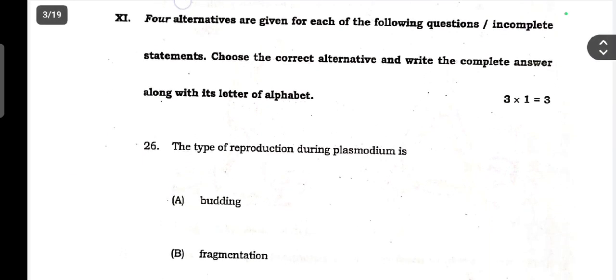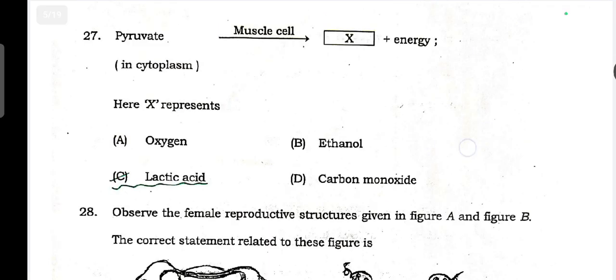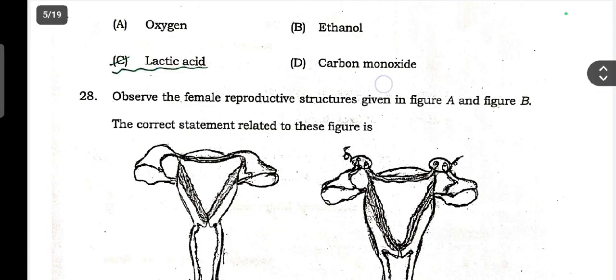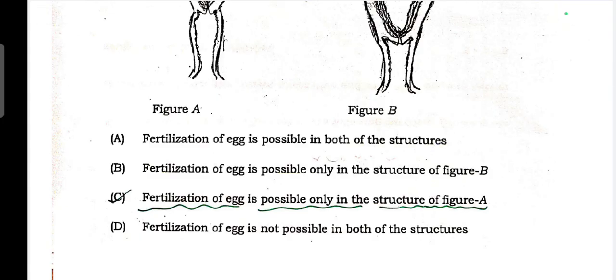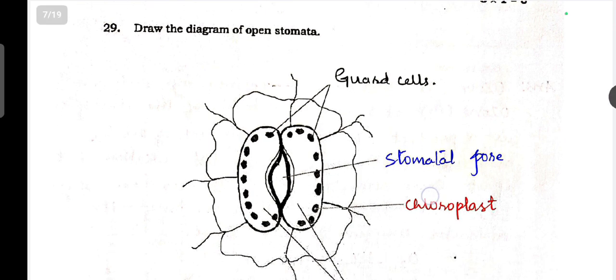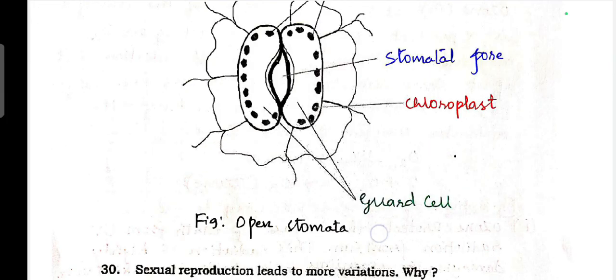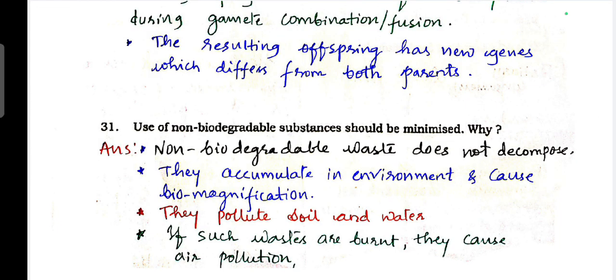Part C, Biology part. Three multiple choice questions. The type of reproduction during plasmodium - answer is D, multiple fission. Pyruvate in muscle cells liberates energy in cytoplasm and X represents lactic acid. Observe the female reproductive structures given in A and B. Correct statement related to this figure - answer is C, fertilization of egg is possible only in the structure of figure A. Next, three mark question. Draw the diagram of stomata. This is the diagram. I have to label the parts also. Sexual reproduction leads to more variations, why? This is the answer. These are all one mark questions. Use of non-biodegradable substances should be minimized, why? Write at least two to three points. Each point carries half marks. So try to write point-wise.